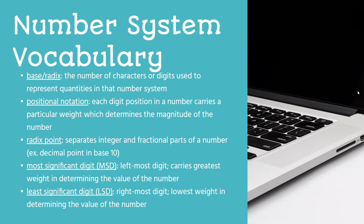Just like any huge topic with a lot of information, we wanted to introduce some vocabulary first. There's the term 'base,' which is the number of characters or digits used to represent quantities in that number system. Binary is also known as base two because there's only two digits: zero and one. There's also most significant bit and least significant bit — the least significant bit is the rightmost, and the most significant is the leftmost.